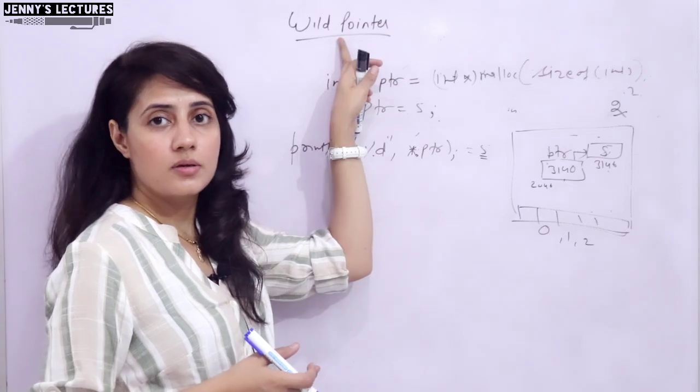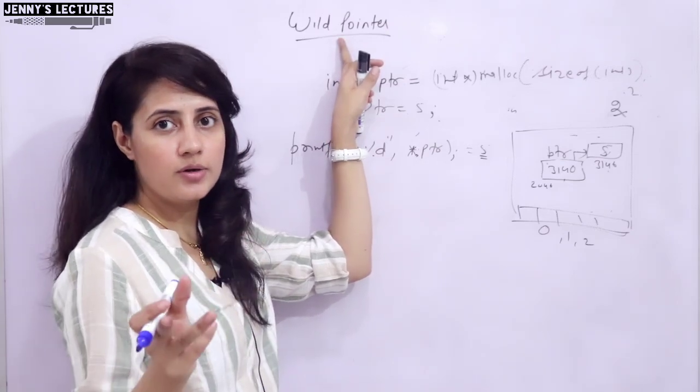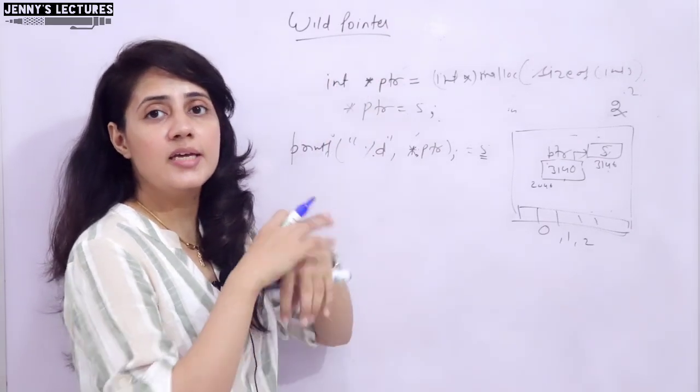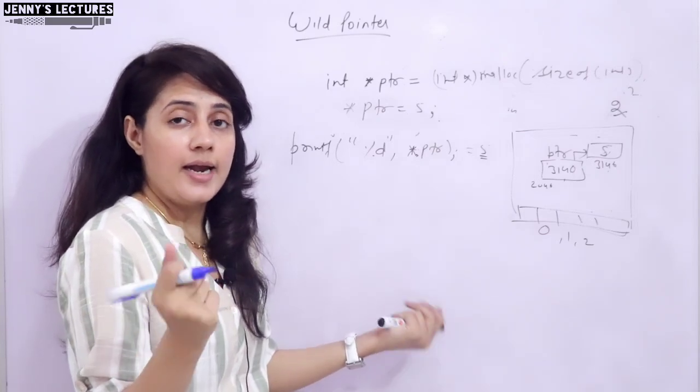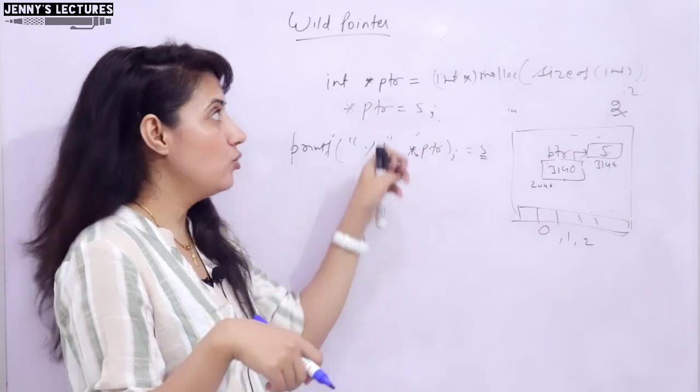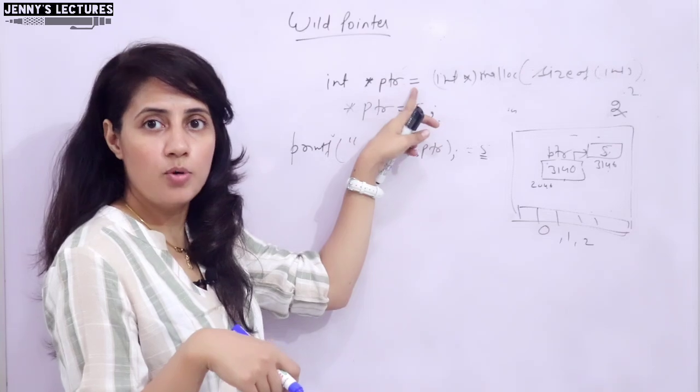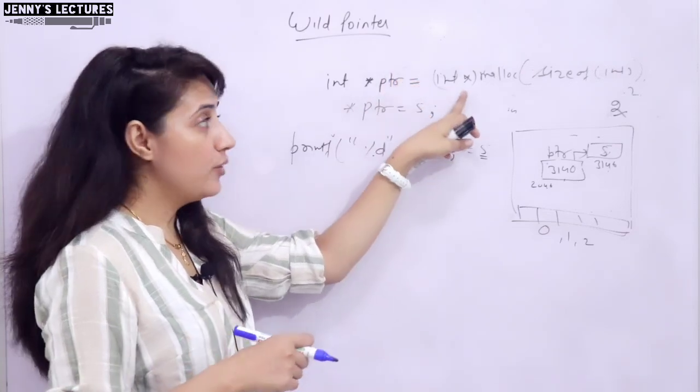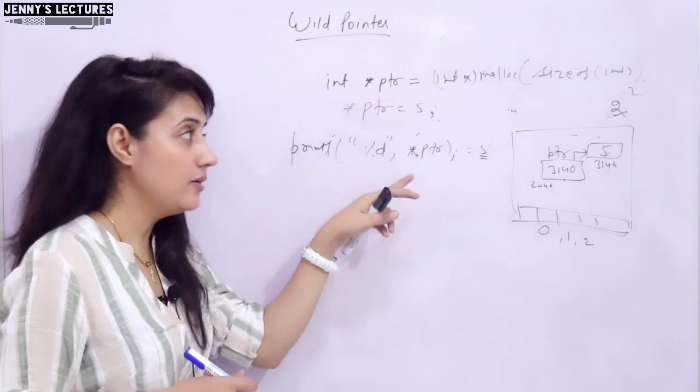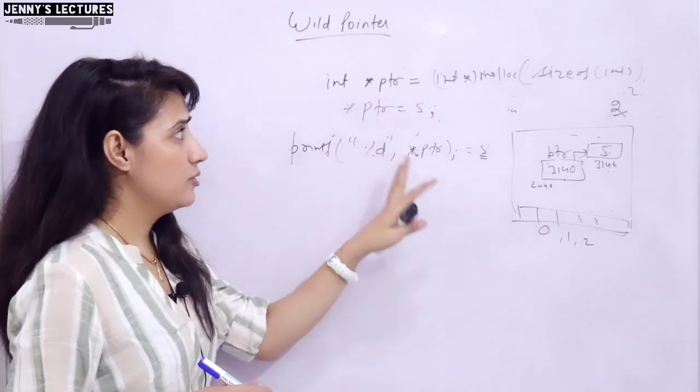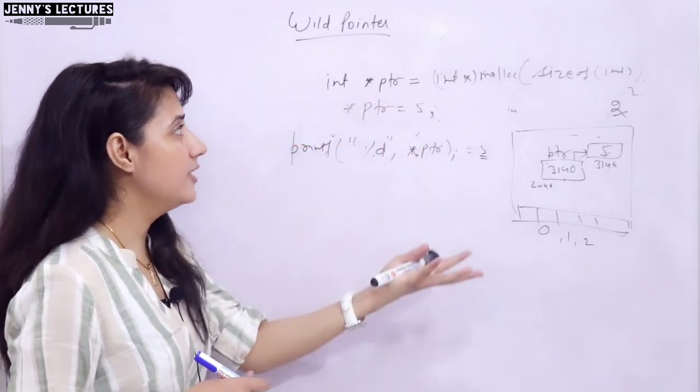So wild pointer is an uninitialized pointer, or it is a pointer that is pointing to any random memory location. And how to remove that situation? Either you can make pointer equal to null pointer at starting, or you can use this method: dynamically when you declare pointer, allocate memory.